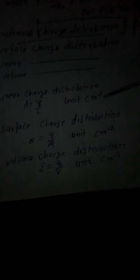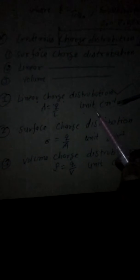Next aati hai continuous charge distribution — charges ka alag alag tarike se distribute hona. Pehla aata hai linear charge distribution, phir surface charge distribution, phir volume charge distribution. Linear charge distribution ko lambda (λ) se denote karte hain, jo equal hota hai charge per unit length. Iski unit hogi coulomb per meter (C m⁻¹).